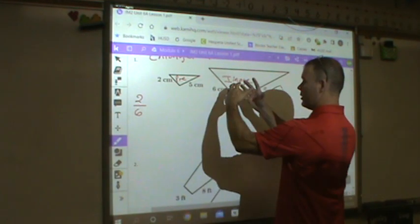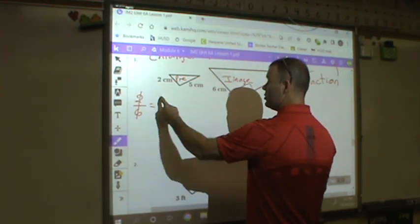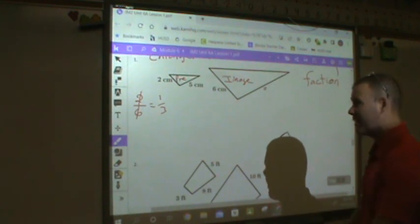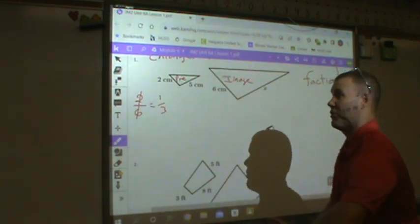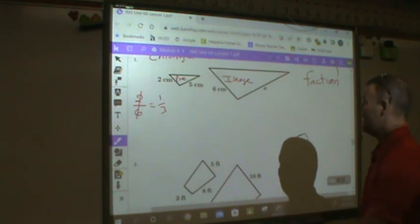Well, remember, the figure got bigger. The figure didn't get smaller. So if I'm going to say my ratio is 2 to 6, 2 to 6 reduces to 1 third. Is it reasonable to say that my scale factor, my bigger figure, is a third of the size of the smaller one? No, no, no, no, no. That's not the case.